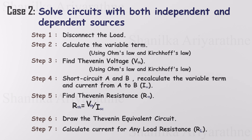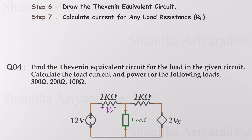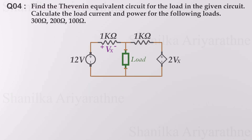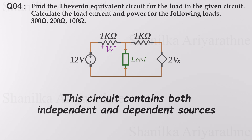Let's discuss an example. Find the Thevenin equivalent circuit for the load in the given circuit, and calculate the load current and power for the following loads. The circuit contains one independent voltage source and one dependent voltage source, so this shall be solved under case 2.